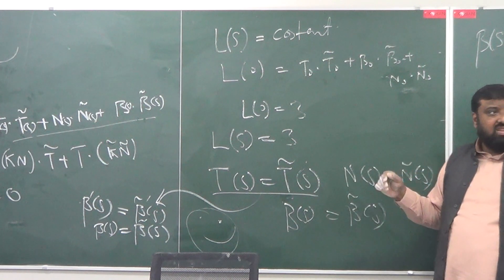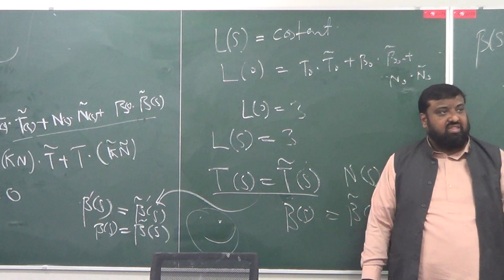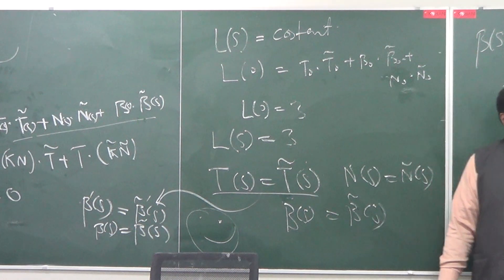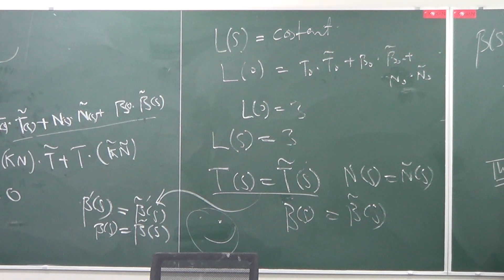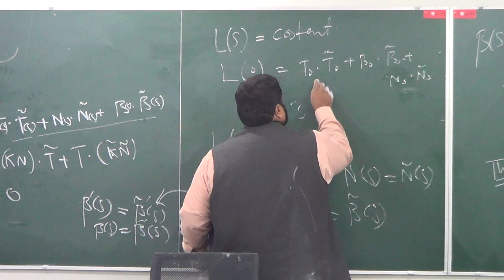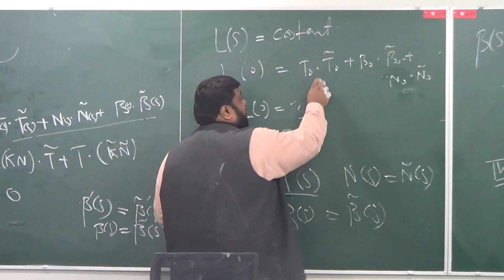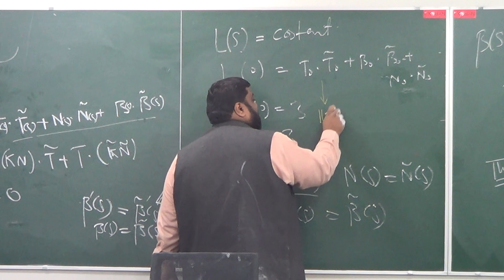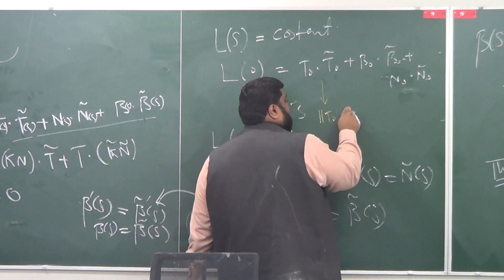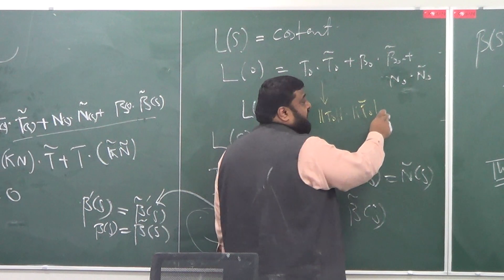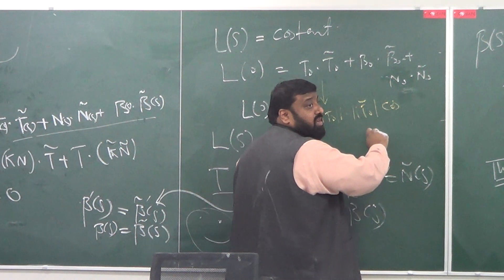This is true after a certain step. So what is the meaning of the dot product here? The dot product is T0 dot magnitude of T0 tilde times the cosine of the angle between the two.